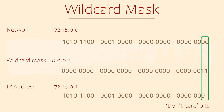That seems complicated, and for a simple example like this, well, it really is. But wildcard masks let us do all sorts of fancy matching if we want to. You don't need to get too complicated for the CCNA exam. If you want to see a fancier example, check out the lab at the end of the video — we'll use one wildcard mask and network command to match a few interfaces at once.